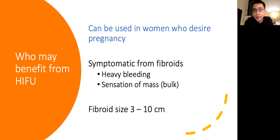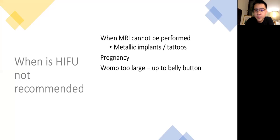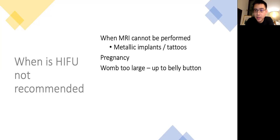Patients who may benefit from HIFU include women who desire to get pregnant in the future, women who are symptomatic from fibroids with heavy bleeding or sensation of mass or bloating in the pelvis, and those with fibroid sizes between 3 to 10 centimeters, which are deemed most appropriate for HIFU ablation. HIFU should not be used in people for whom MRI cannot be performed — for example, those with metallic implants or tattoos — patients who are already pregnant, or those with very large fibroids where the uterus is extremely enlarged.